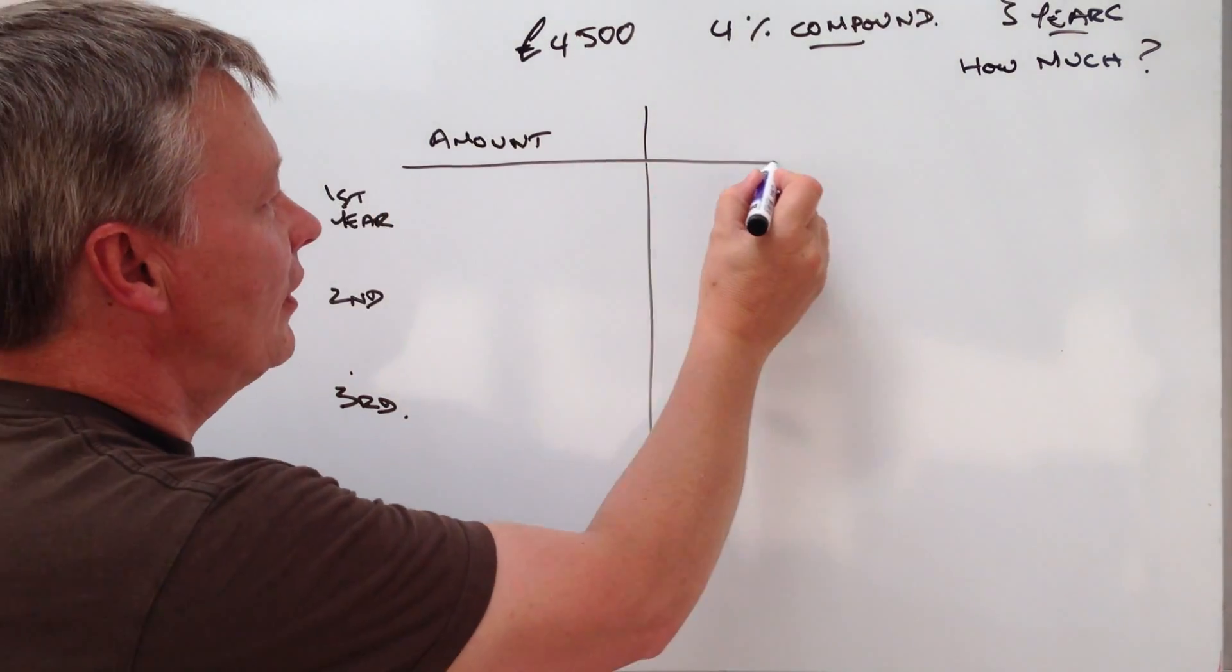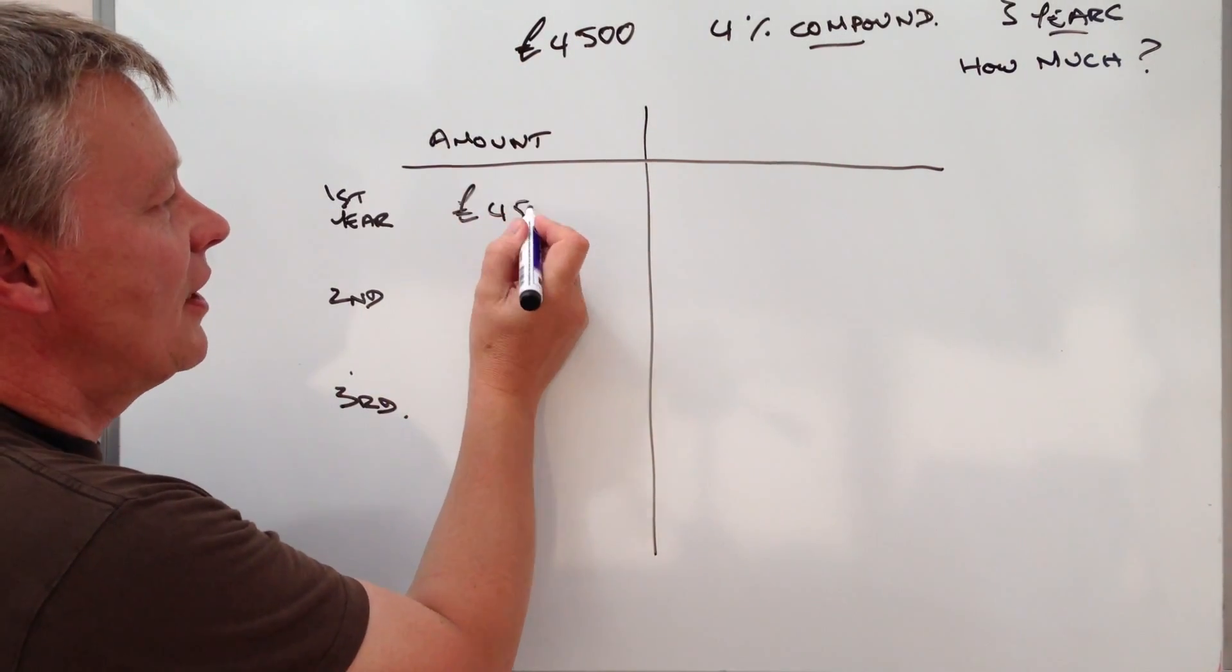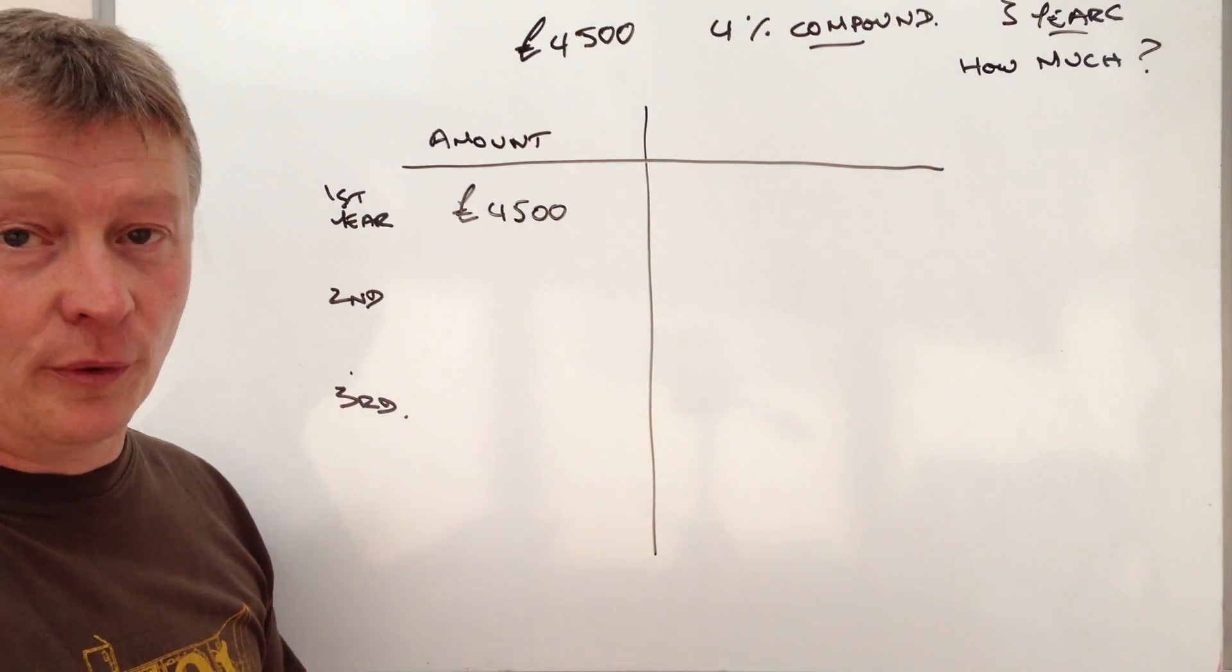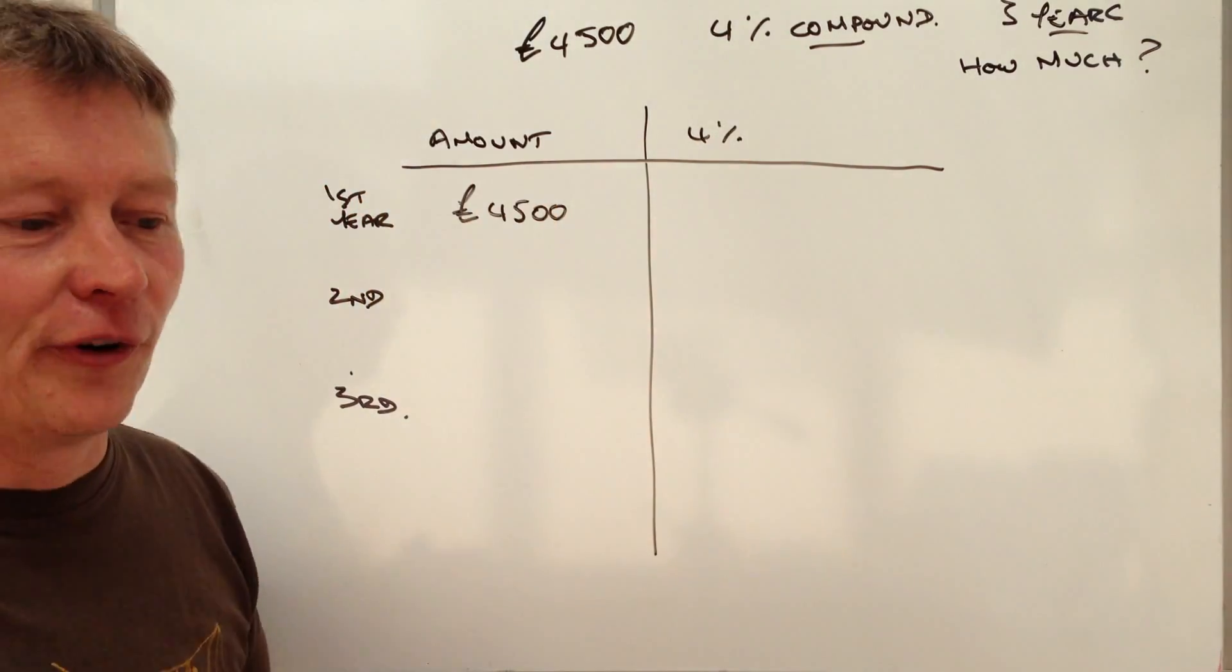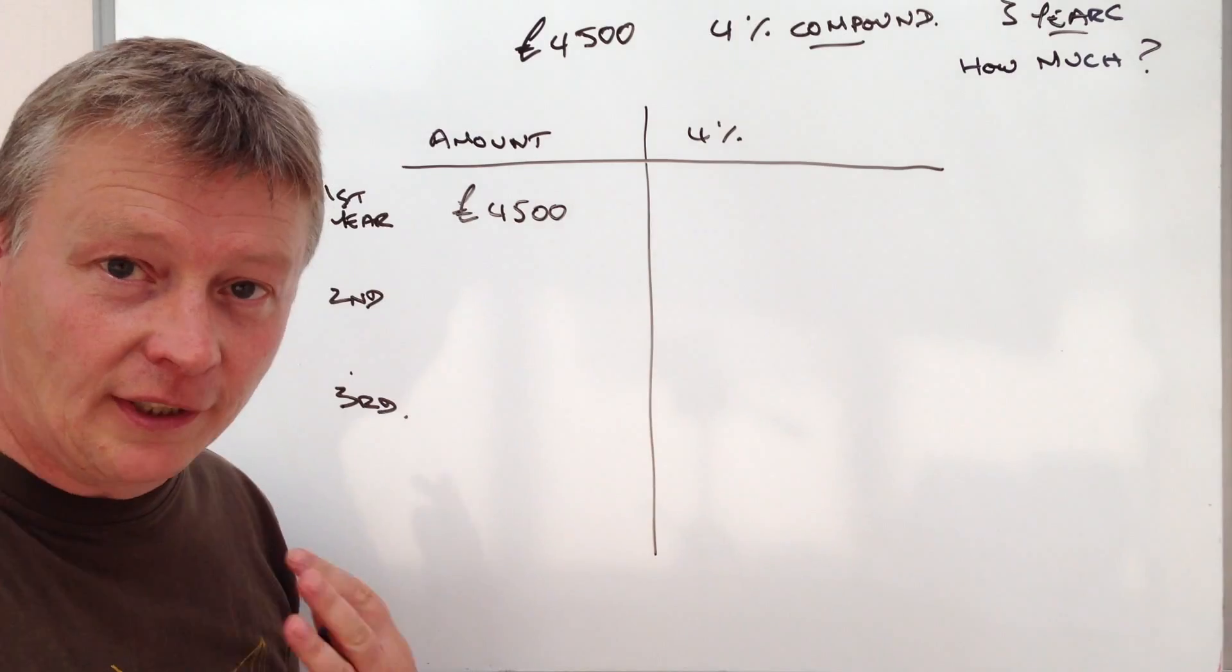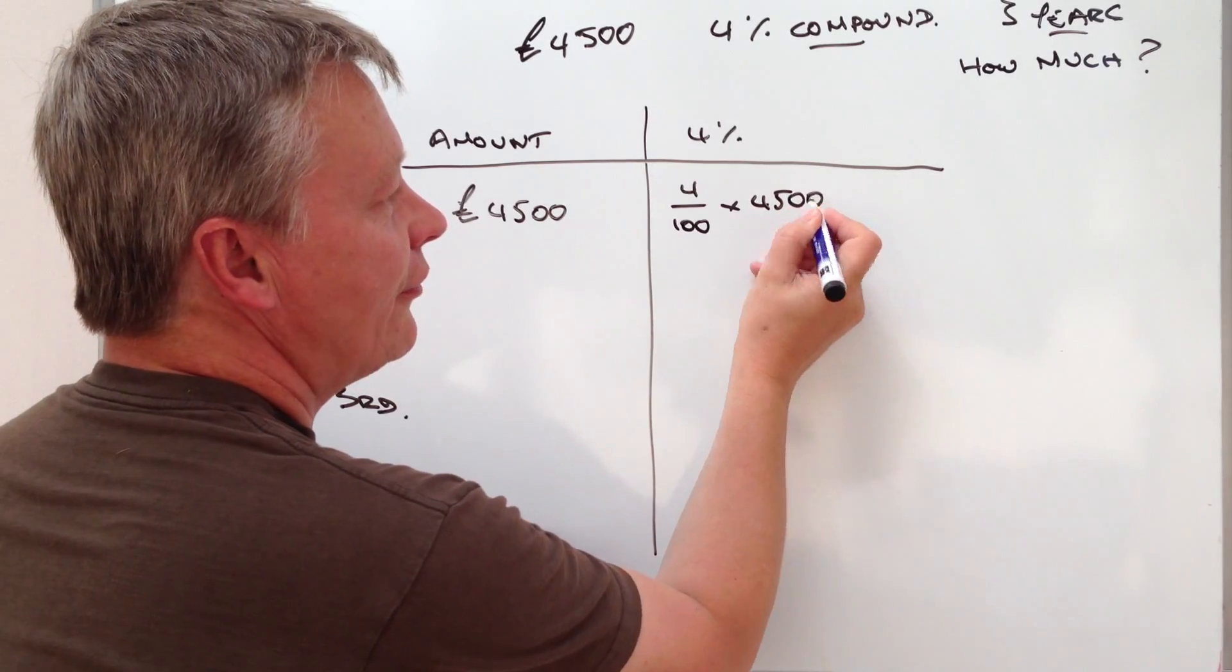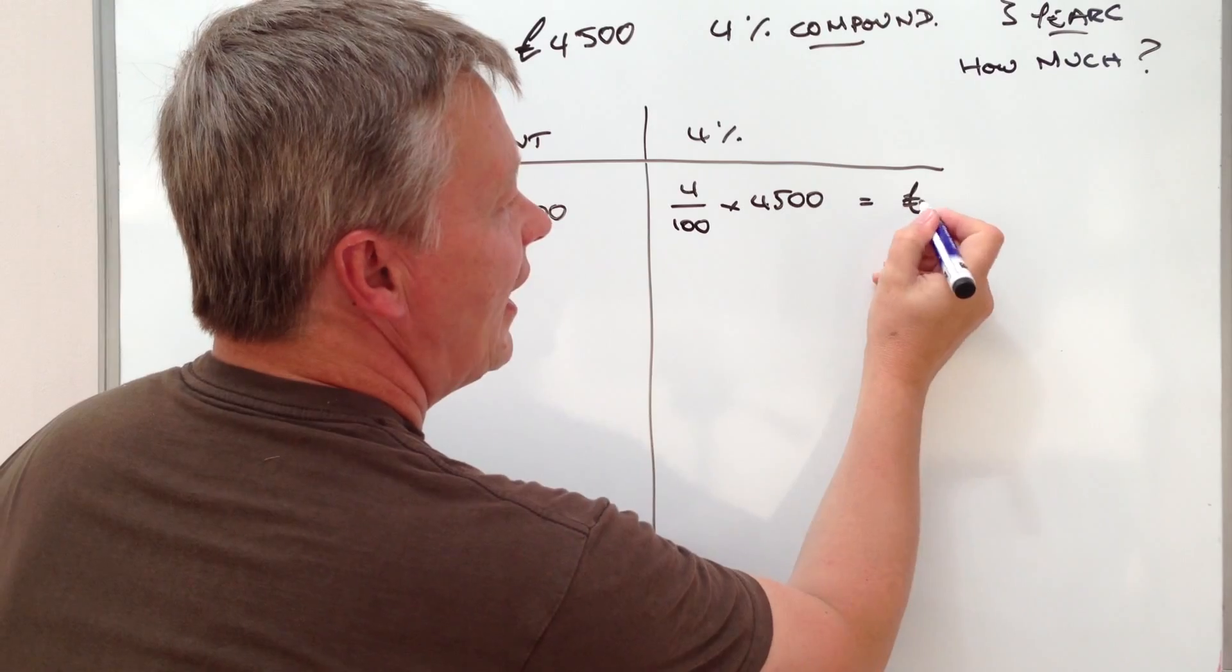So this is my table here and they start off with £4,500 so put that into the account. Now at the end of the first year they're going to be paid 4% compound interest so in other words what we have to do is work out 4% of £4,500. Now if you use a calculator or you do it as a mental method or you do it as a formal method basically it's 4% times £4,500 and you calculate that through and you're going to get £180.